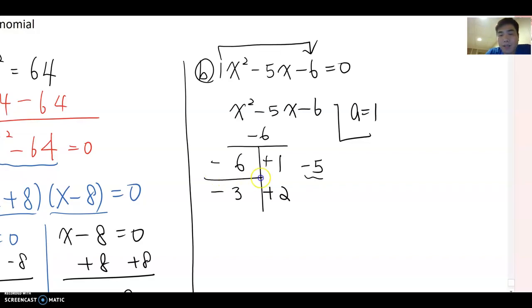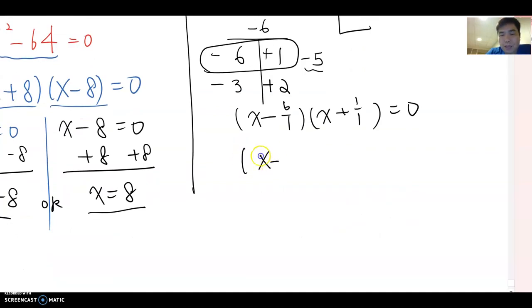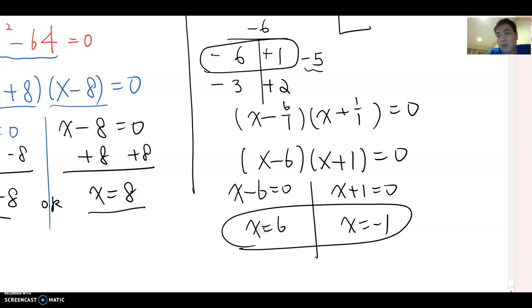Now, six we can break them out: six times one or three times two. So among these two pairs, which one gives the sum equal negative five? Yes, negative six and one. Therefore, open two parentheses and make x minus six over one, x plus one over one equal to zero, which means x minus six, x plus one equal to zero. Therefore, make x minus six equal to zero and x plus one equal to zero. Then x equal to six or x equal negative one. That will be the answer for this equation.